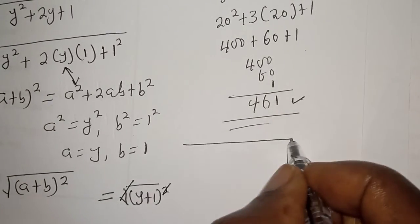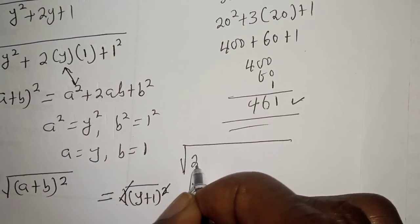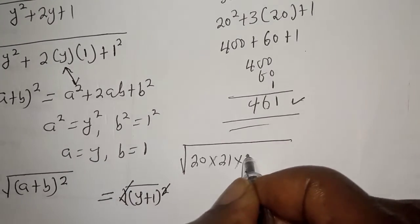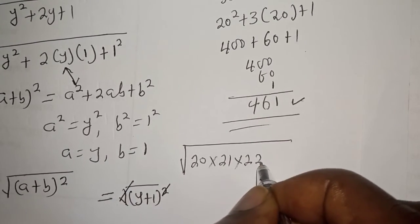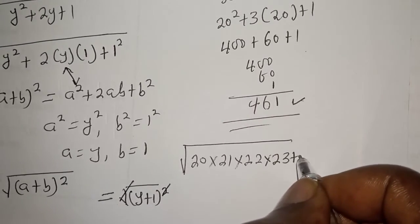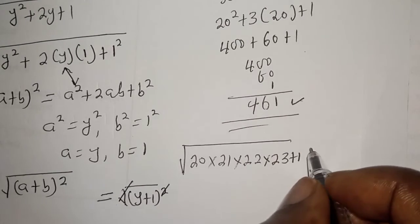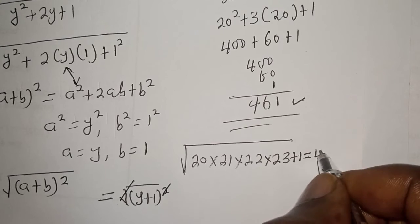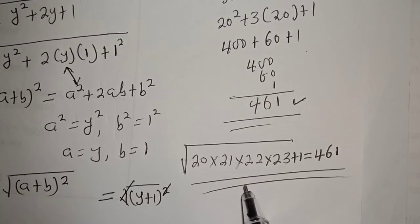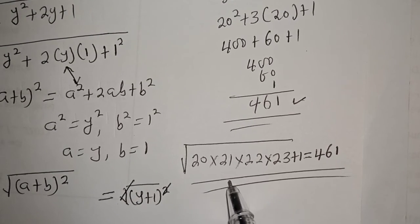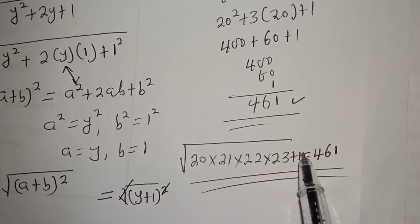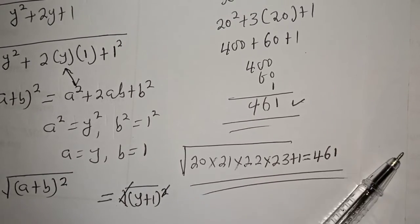Therefore, the square root of 20 multiplied by 21 multiplied by 22 multiplied by 23 plus 1 is equal to 461. If you enjoyed the class, please don't forget to like, share, comment and subscribe. Thank you.